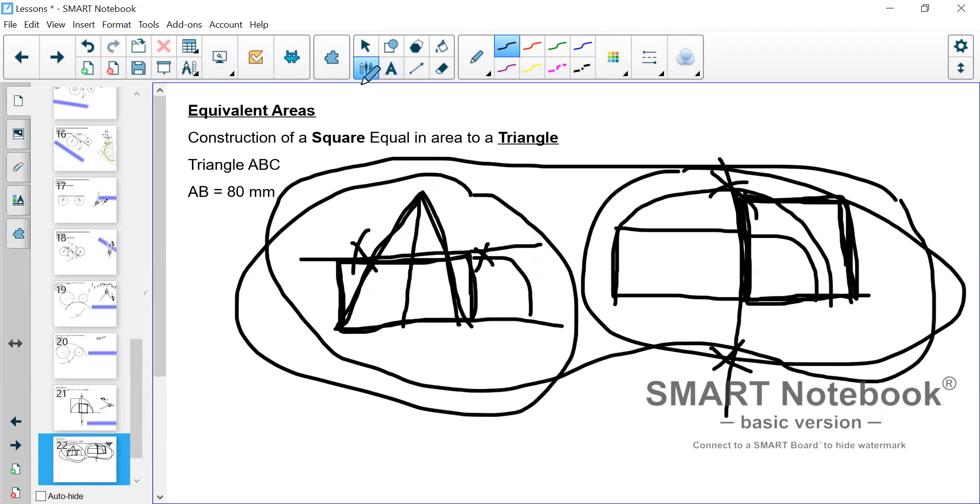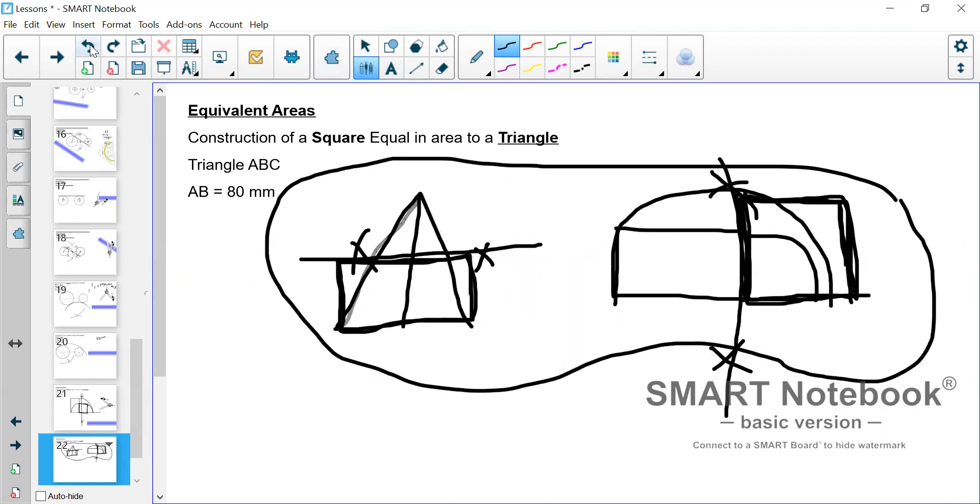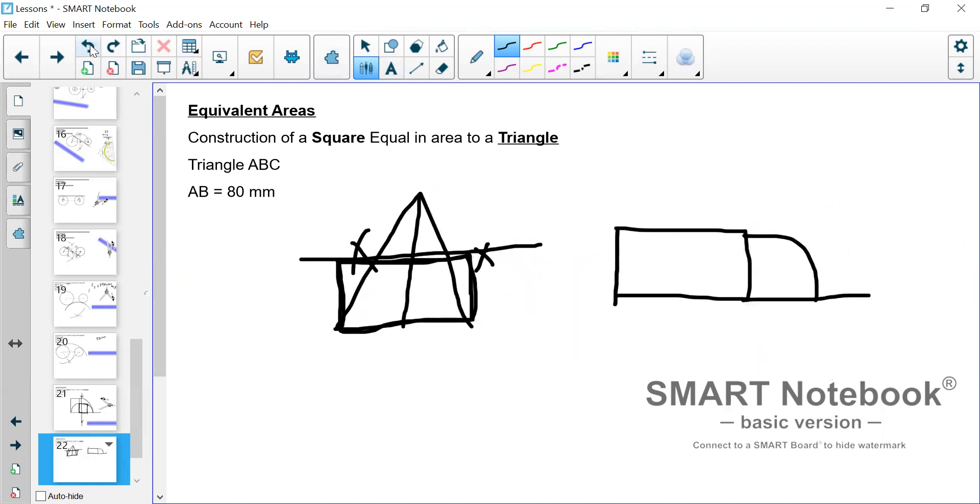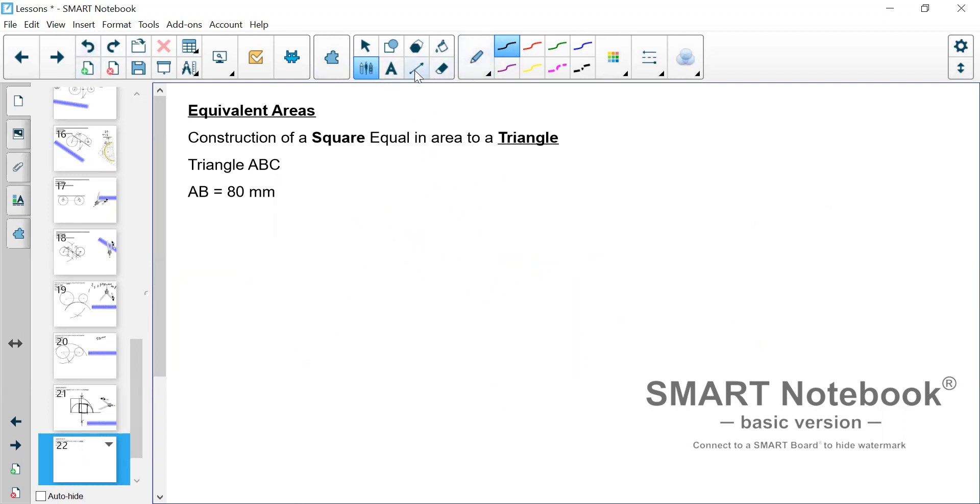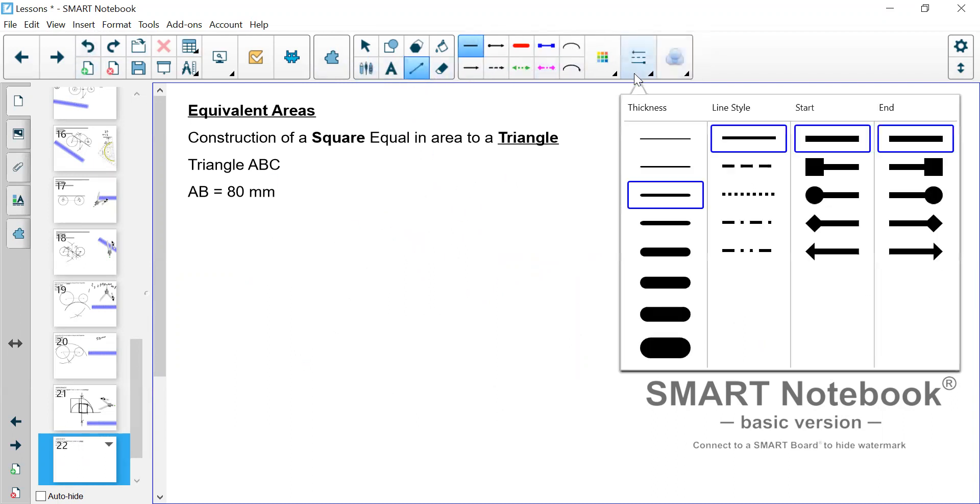So, we would have all three of them being equal. That is our objective, to have all of them equal. Step one, construct the triangle.